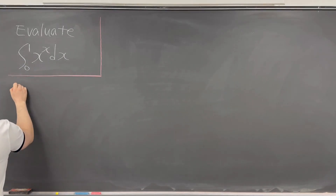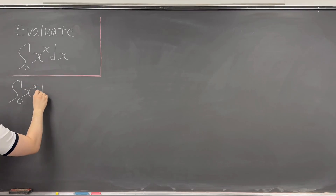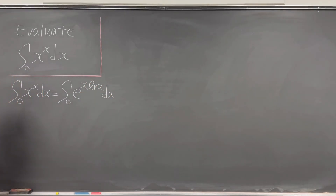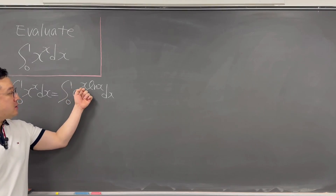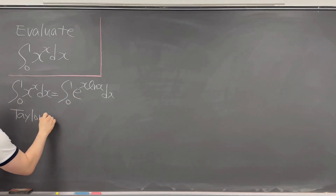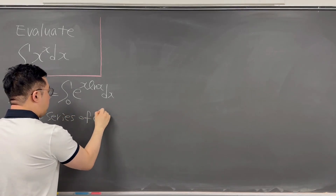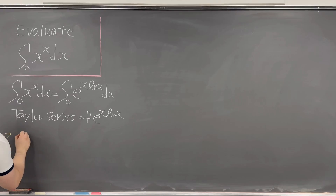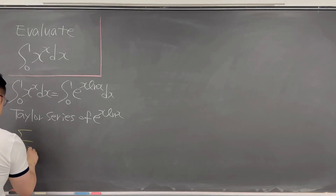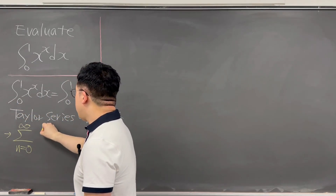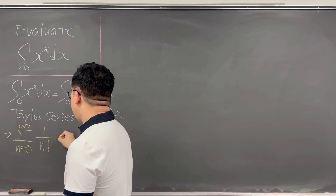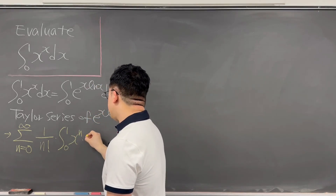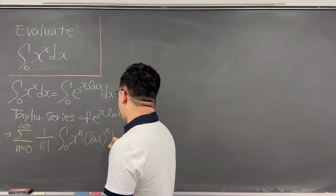So first, I'll be rewriting this integral from zero to one of x to the power of x dx as the integral from zero to one of e to the power of x times ln x dx, so that we can work on the Taylor series of e to the power of x times ln x. Working this Taylor series, it is going to be a summation where n is from zero to infinity of one over n factorial, times the integral from zero to one of x to the power of n times ln x to the power of n dx.